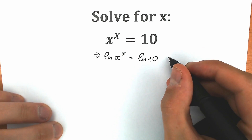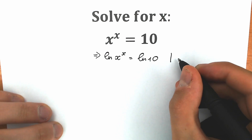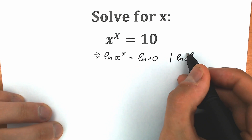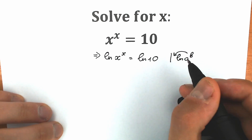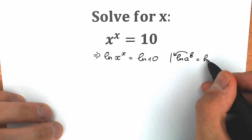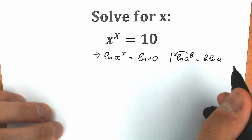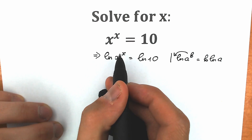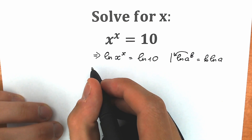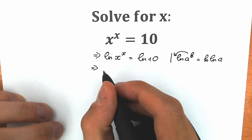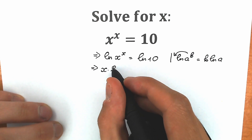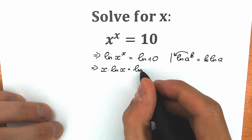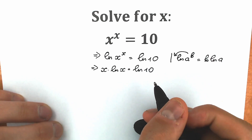If you know a really important property: we have natural log of something to the power b, and this b will come down. This is the main log property which helps us a lot. So this x comes down, and as a result we have x times natural log of x equal to natural log of 10. This is our first step.